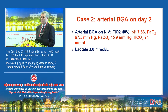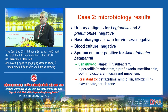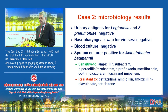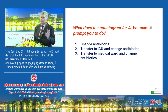Urine antigens were negative for Legionella and Strep pneumoniae. Nasopharyngeal swabs for viruses were negative. Blood culture negative. Sputum culture was positive for Acinetobacter baumannii — not so bad, because it was susceptible to ampicillin-sulbactam, pip-tazo, ciprofloxacin, moxifloxacin, co-trimoxazole, amikacin, and imipenem. It was resistant to other beta-lactams. The question now: what does the antibiogram for Acinetobacter baumannii prompt you to do? Change antibiotics, transfer to ICU and change antibiotics, or transfer to medical ward and change antibiotics?